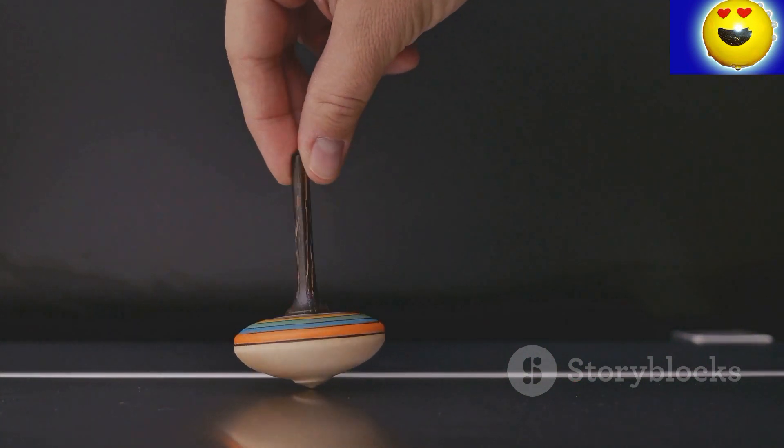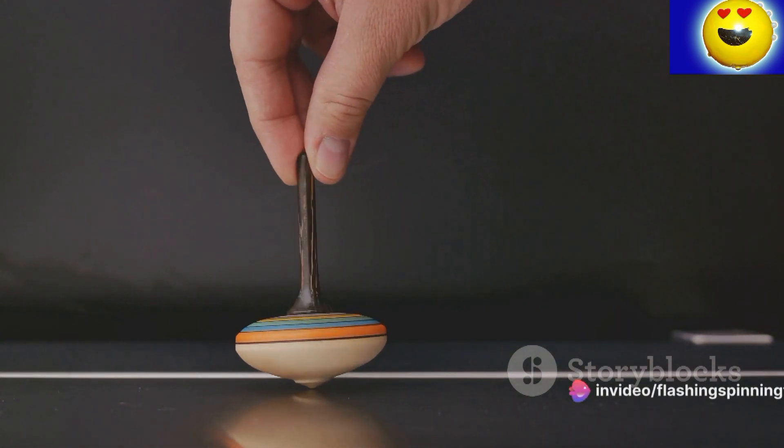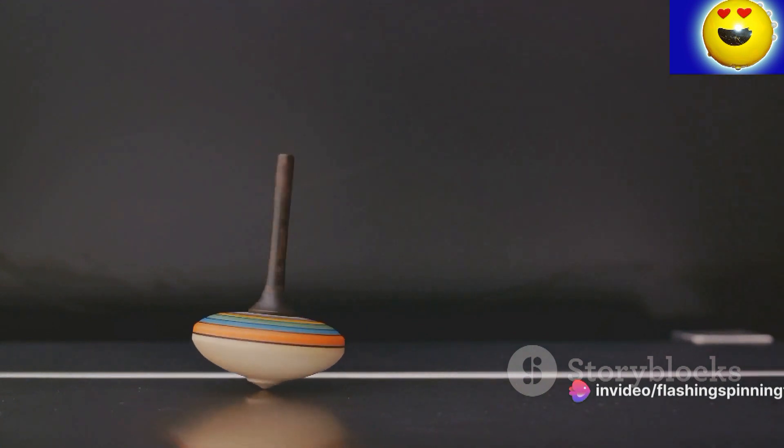Without movement, it's a slave to gravity, falling over without a fight. But introduce a spin and suddenly it's as if the top has developed a will of its own.